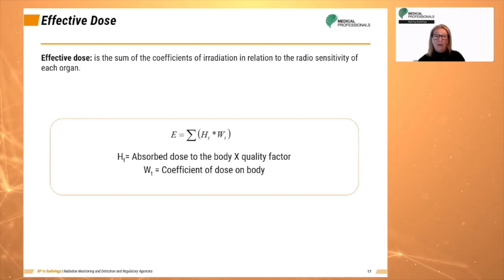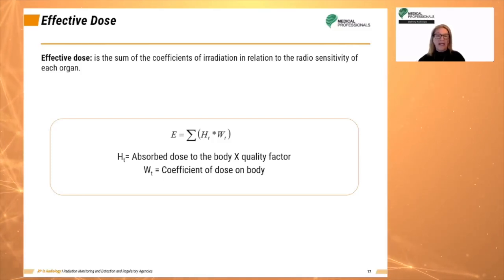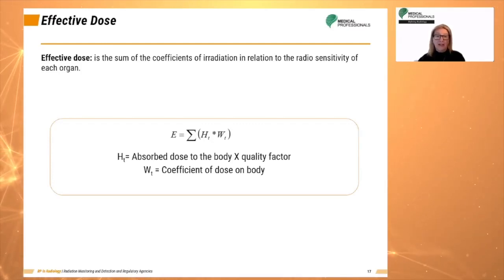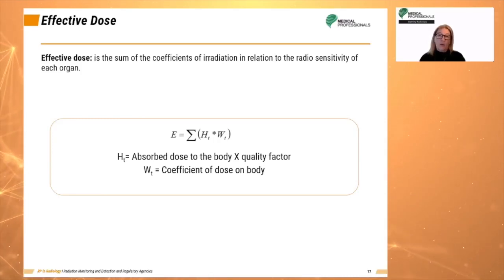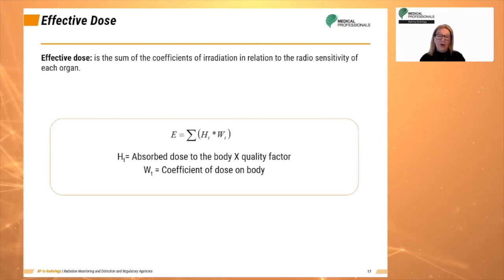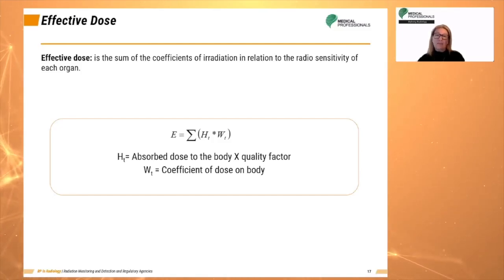Let's look at an example of a calculation of effective dose. If the following organs were exposed: the lung at 100 millisieverts, the liver at 70 millisieverts, and cortical bone at 300 millisieverts, then the total effective dose is calculated using tissue weighting factors: 100 for the lungs times 0.12, 70 for the liver times 0.04, and 300 for cortical bone times 0.01. Adding those together gives 12 plus 2.8 plus 3 millisieverts, or 17.8 millisieverts.